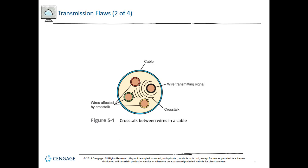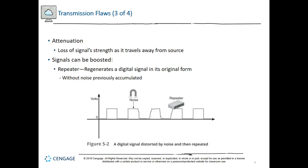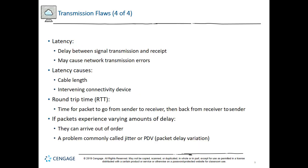Another issue is attenuation — the weakening of a signal over time and distance. After a period of time, the signal gets too weak and can't be read, so we may need to put in a repeater to clean up and amplify the signal. It's much easier to clean up a digital signal than an analog one. Cable length always comes into play, which is why different cables have different limitations — fiber optics versus copper cable.